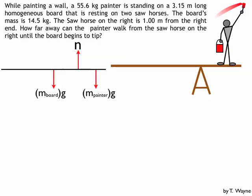I need to pick a pivot point. The pivot point that I choose, the question says, how far away from the support on the right can the painter walk? So I'm going to use the support as the pivot point.